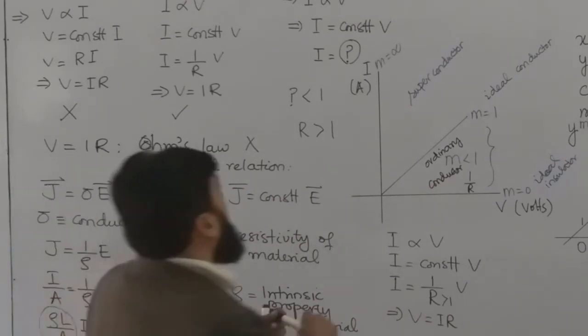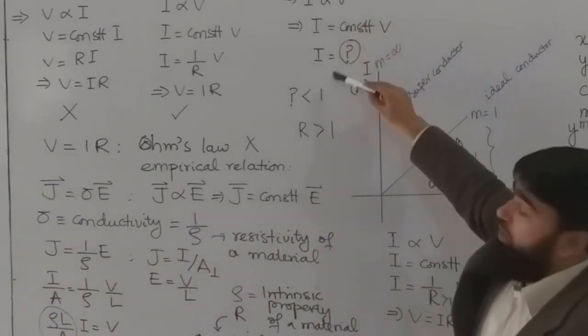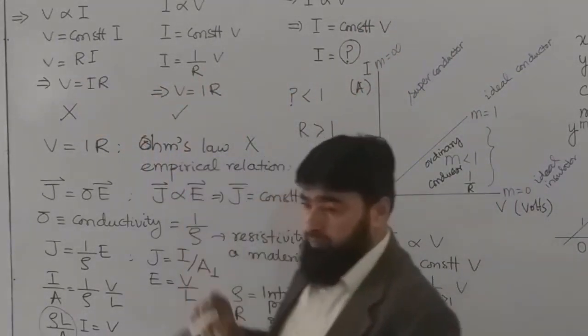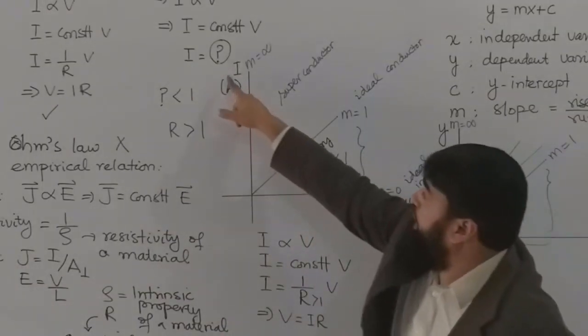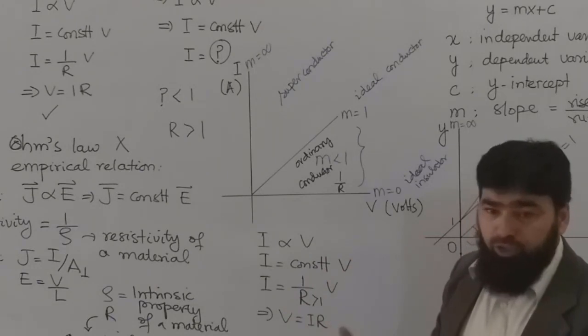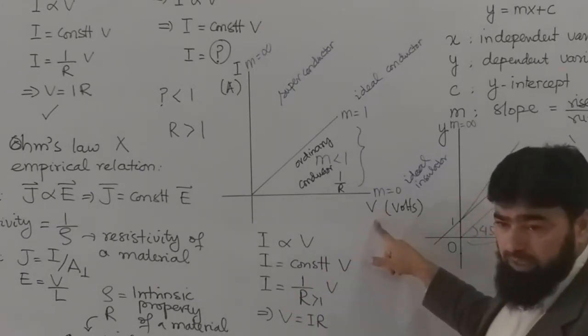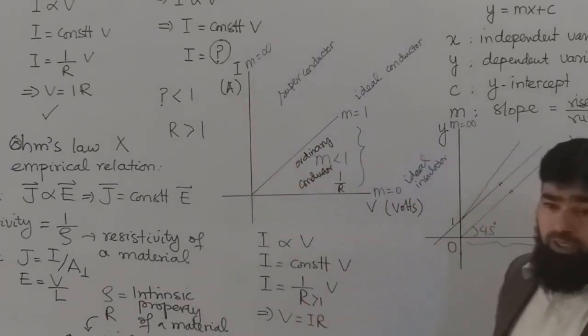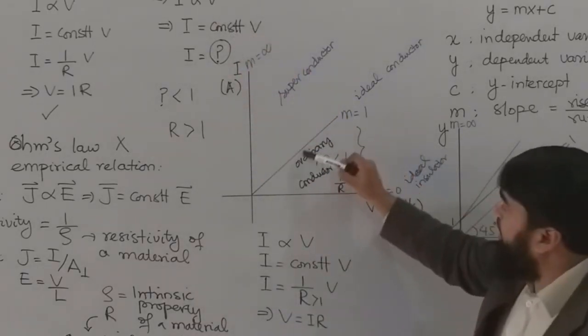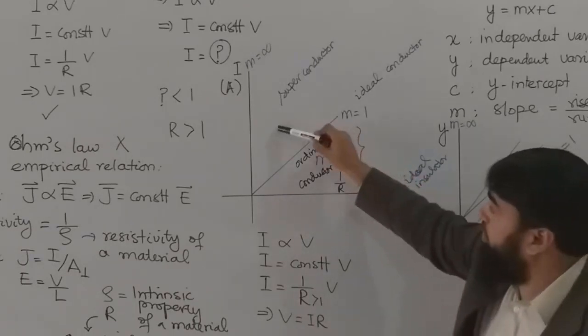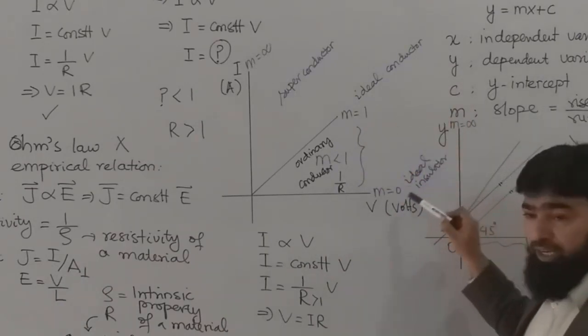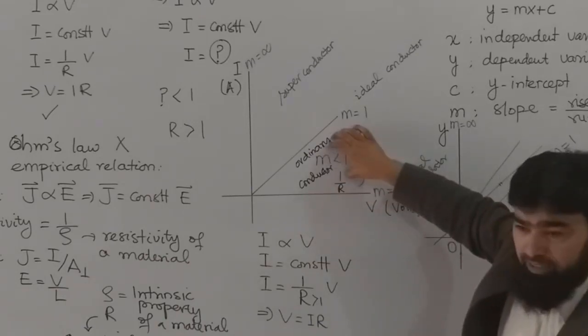And this is the right way to write the Ohm's law, to write the equation. Not this one, this is absolutely not. Because in this situation you will have to write V here and I here, and then your dependent and independent are jumbled. It's not right. Your independent should be on this axis while the dependent should be here. So our decision of keeping this constant less than 1 is our limitation of the Ohm's law. That this law is not for the superconductor. This law is not for the ideal conductor. This law is not for the ideal insulator. It is only for the ordinary conductor and it comes in this range.